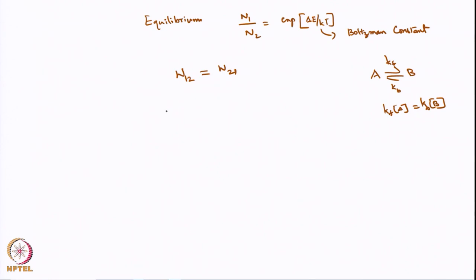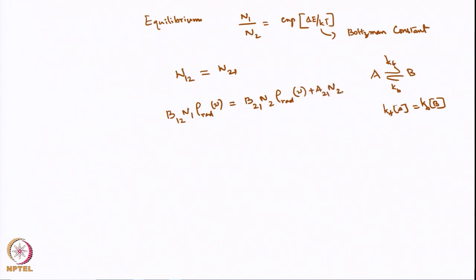Under equilibrium, the rate of absorption should equal the total rate of emission — spontaneous plus stimulated — giving: B₁₂ N₁ ρ_rad(ν) = B₂₁ N₂ ρ_rad(ν) + A₂₁ N₂. We now have two equilibrium equations: one from Boltzmann's law and one from the radiation balance.